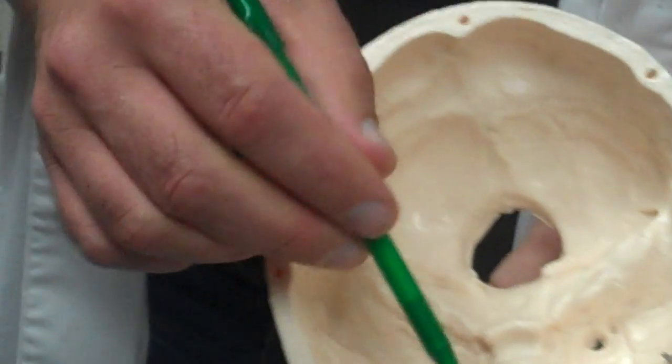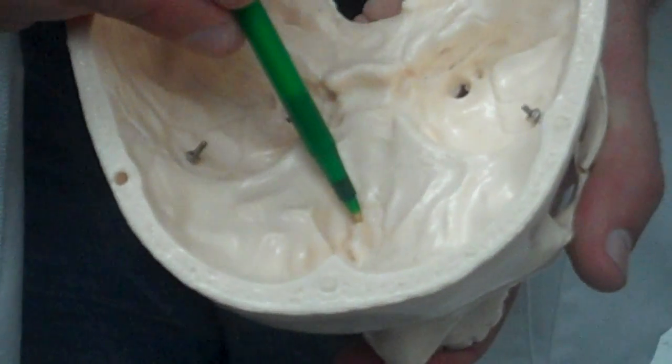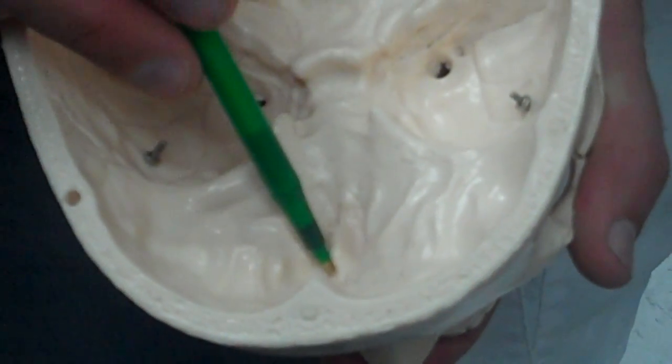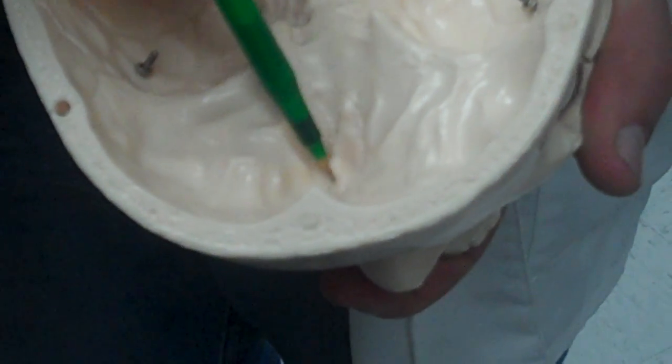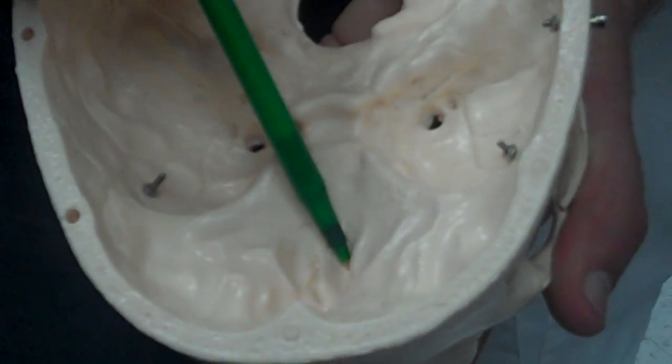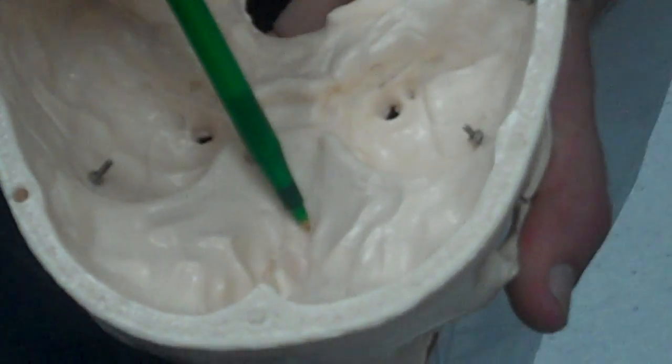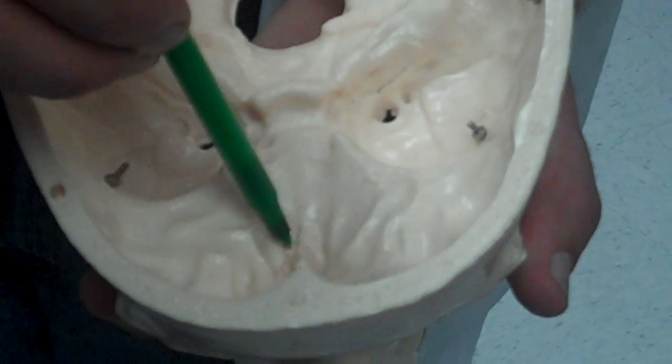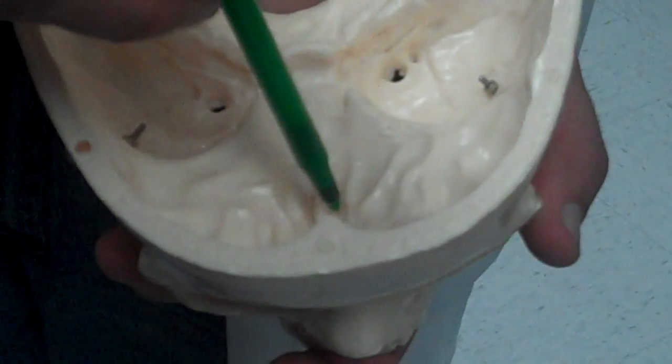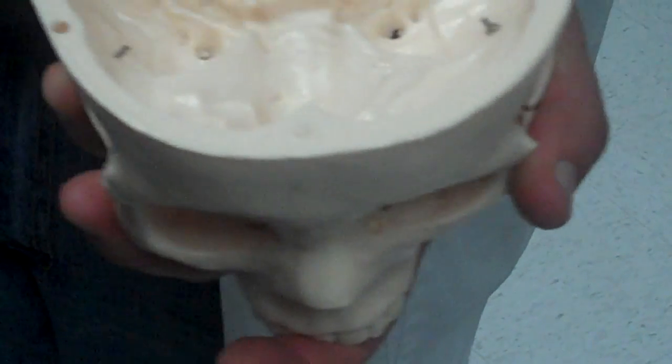Ethmoid bone. Crista galli. It's this part sticking up. It's basically called the coxcomb, also called like the rooster top. The cribriform plate. Little holes in this thing all up on there.